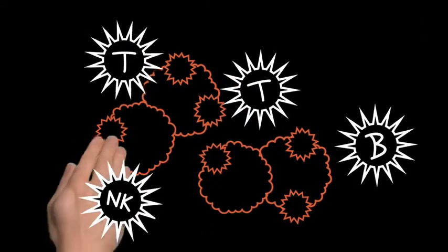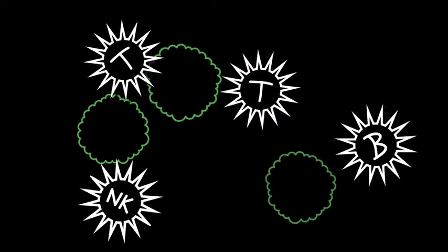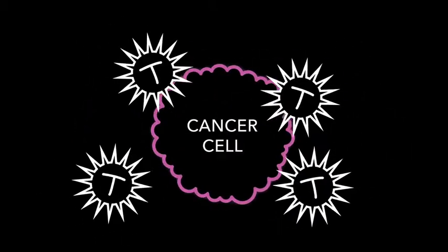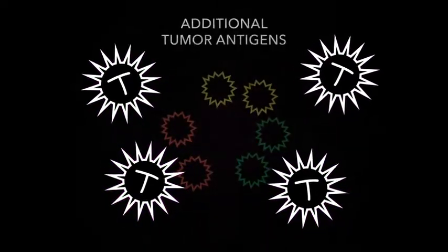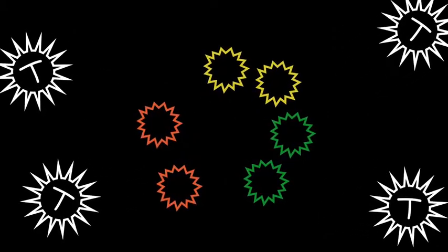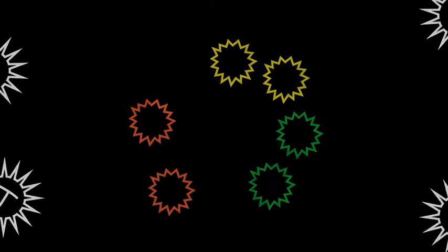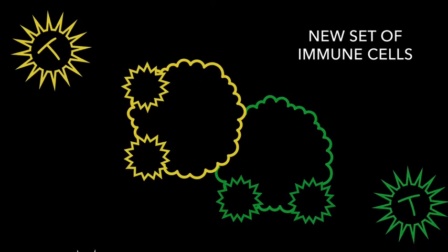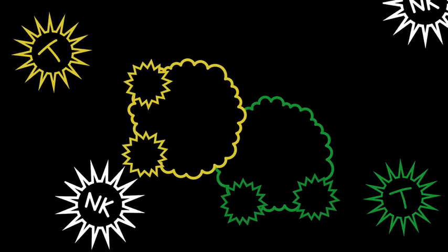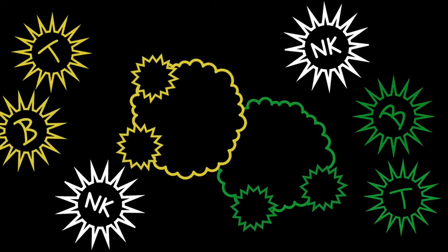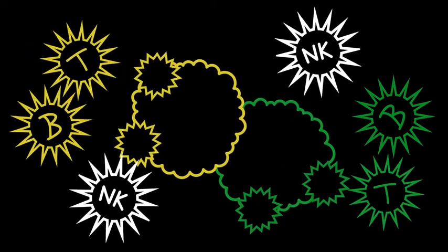But what if some of a patient's tumor cells lack this antigen? There is some evidence that an activated immune system may be able to deal with this and keep the fight going. Whenever a cancer cell is destroyed, it releases additional tumor antigens. Many of these antigens will be different than the original antigen introduced by the immunotherapy. These different antigens may also be picked up by antigen-presenting cells, which can recruit and activate a totally new set of T cells, natural killer cells, and B cells. These immune cells may now be able to attack cancer cells bearing the different antigens.